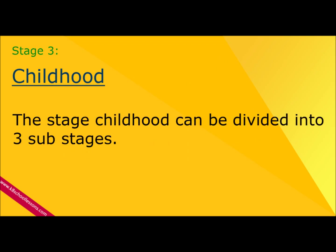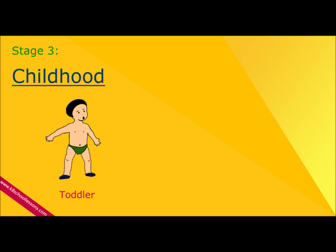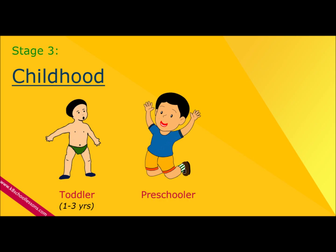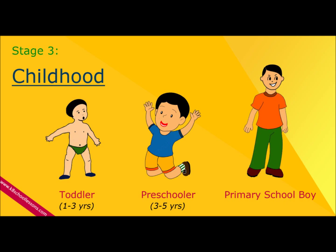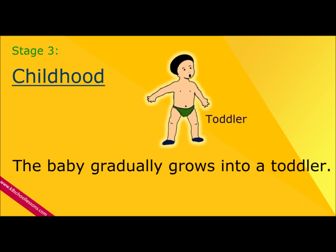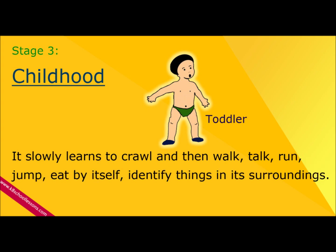Stage 3: Childhood. The stage of childhood can be divided into three sub-stages: Toddler, 1 to 3 years; Preschooler, 3 to 5 years; Primary schoolboy, 5 to 12 years. The baby gradually grows into a toddler, and slowly learns to crawl and then walk, talk, run, jump, eat by itself, and identify things in its surroundings.